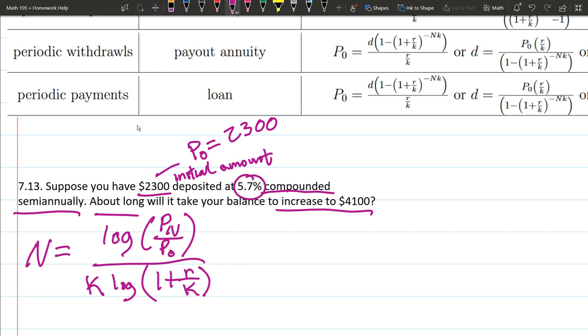This 5.7%, there should only be one percent in each of these problems, and that percent is the interest rate. So that's always going to equal r. Now just make sure you go 0.057.